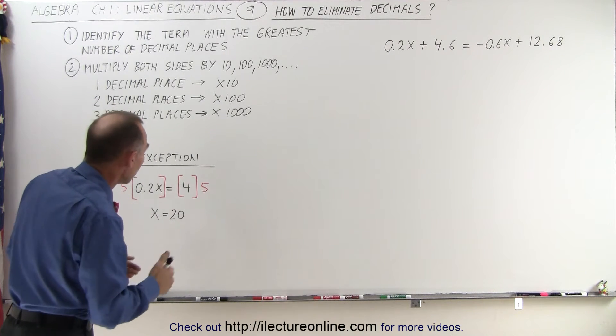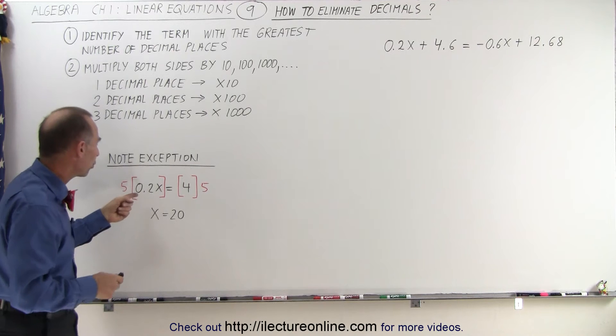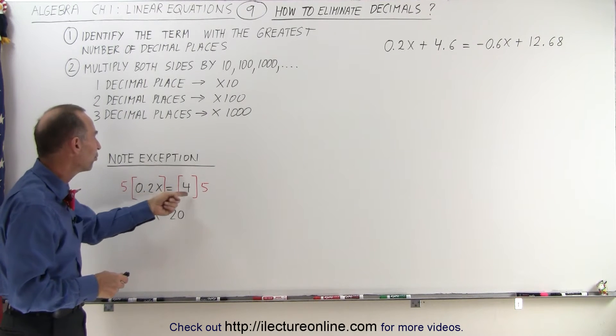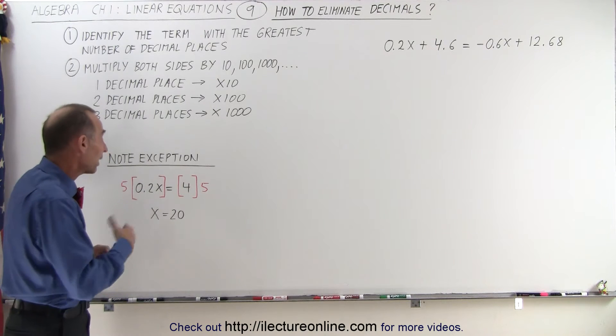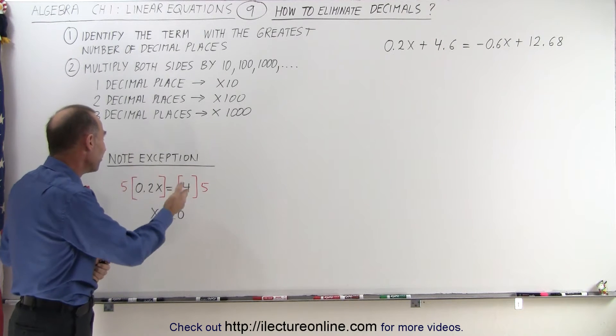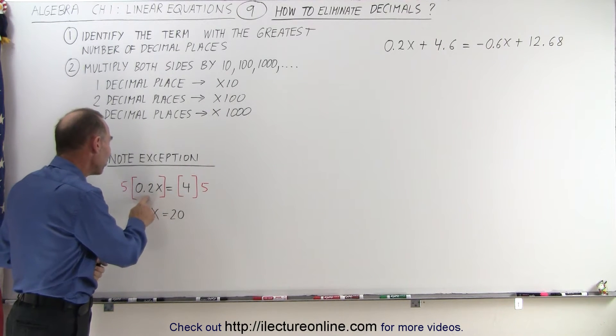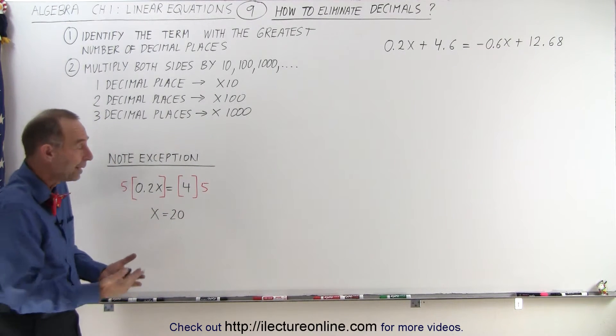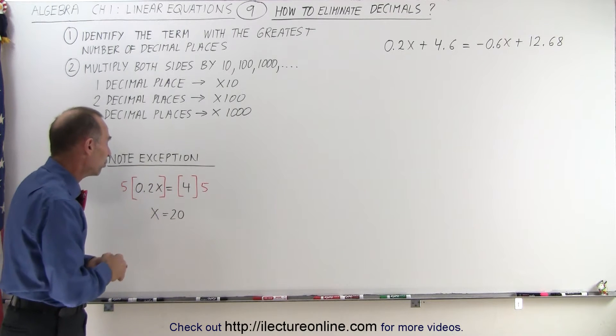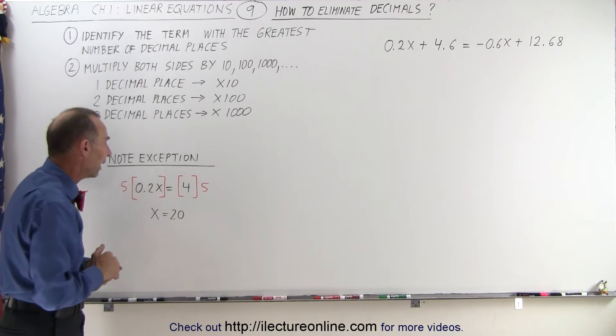Now there's exceptions to that rule. For example, if we have an equation that is 0.2x equals 4, we don't have to multiply both sides by 10. We could get by by multiplying both sides by 5, because that would take the left side and turn into x. And then the right side is 20, and then we have the solution right away, instead of doing an additional step of reducing it down to x.